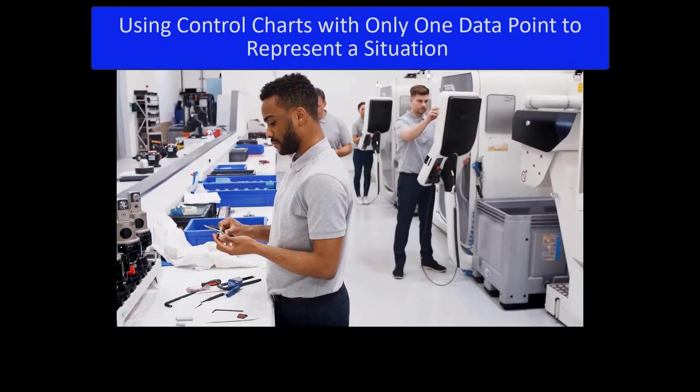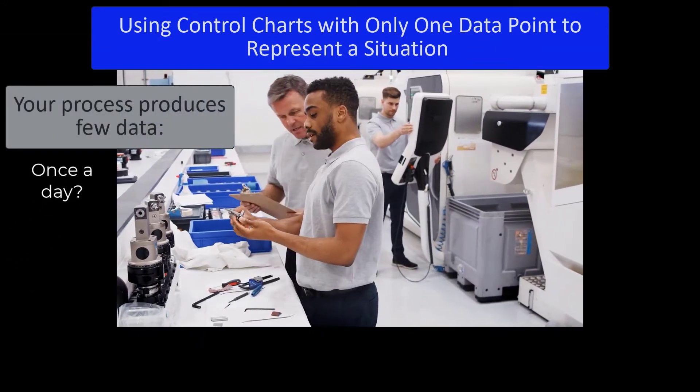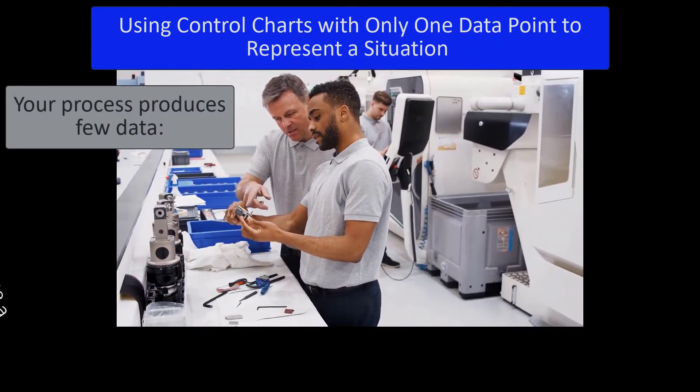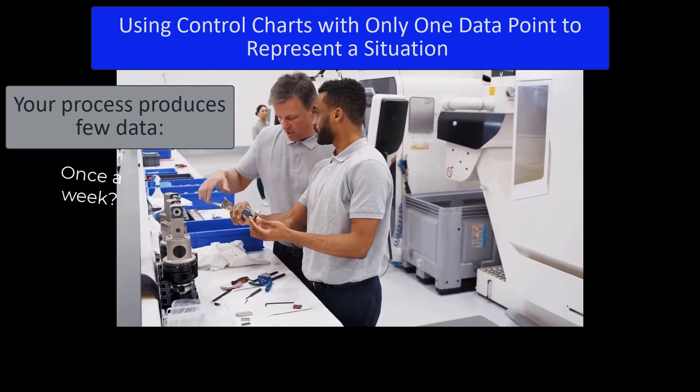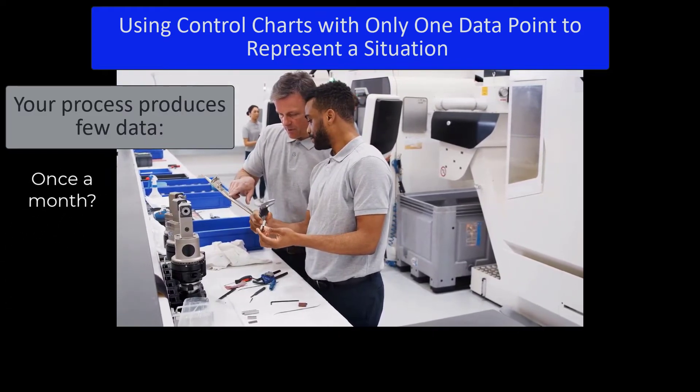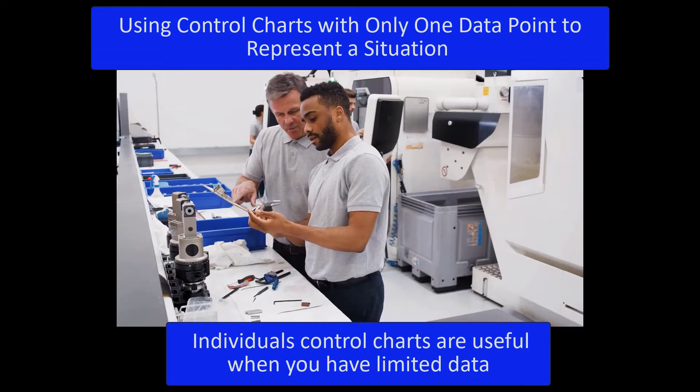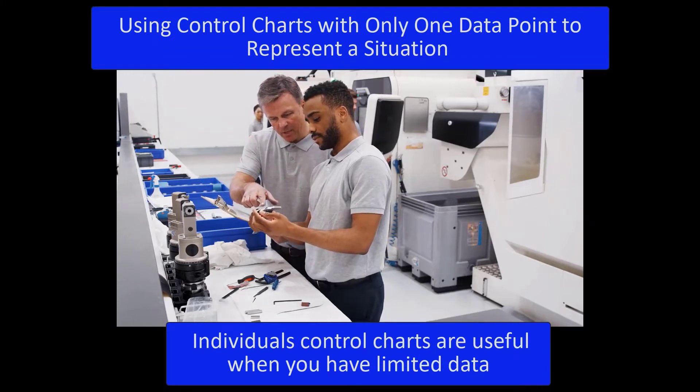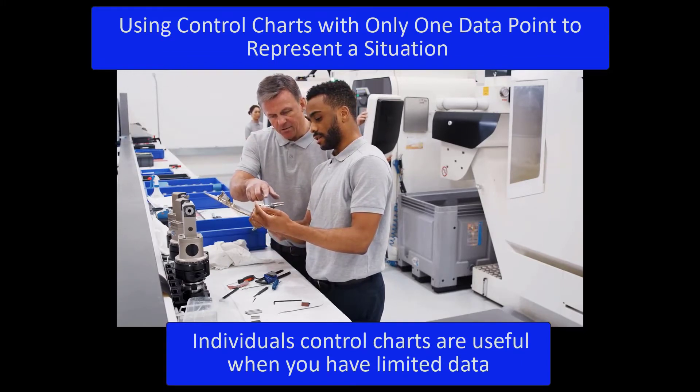This video is going to take a look at how you use control charts when you only have one data point to represent a situation. So maybe it's once a day, once a week, once a month, once a quarter, but your process produces few data. What do you do in this case? An individual control chart is very useful when you have limited data like this.